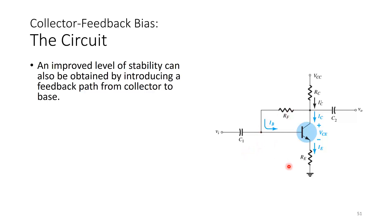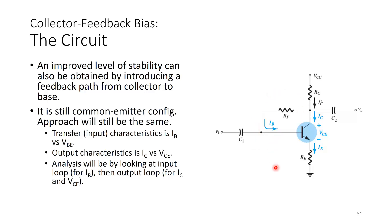An improved level of stability can be obtained by introducing a feedback path from collector to base. We already know from voltage divider biasing that negative feedback was supplied by RE, but now we are introducing another path from collector to base. It is still a common emitter configuration because the emitter terminal is the common terminal shared between the input (base-emitter) and the output (collector-emitter). Analysis is done via the input loop for IB and the output loop for IC versus VCE.